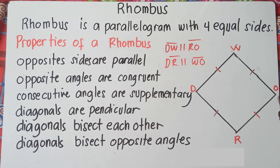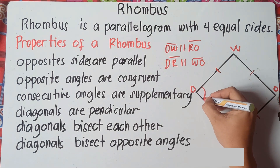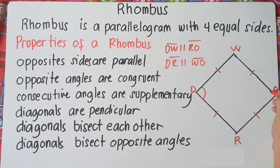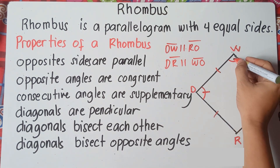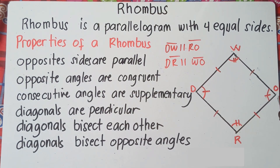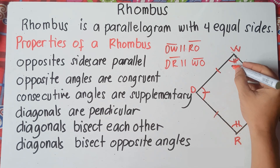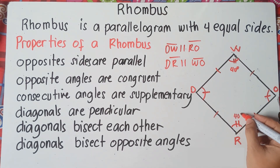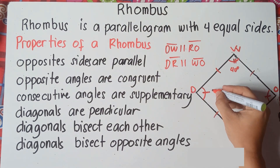The second property says that the opposite angles are congruent. Therefore, angle D is congruent to angle O, and angle W is congruent to angle R. For example, if angle W is 40 degrees, then angle R must be 40 degrees, because opposite angles are congruent. And if angle D is 140 degrees, then angle O should also be 140 degrees.